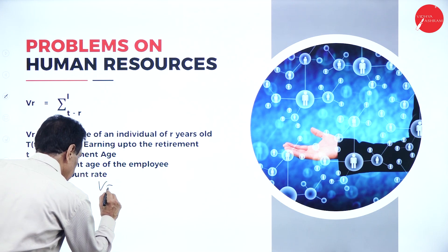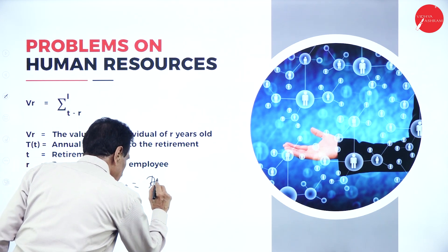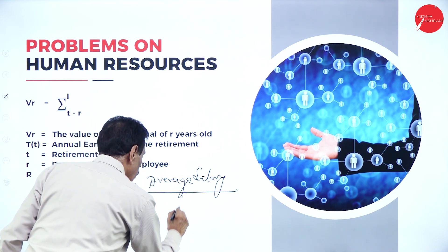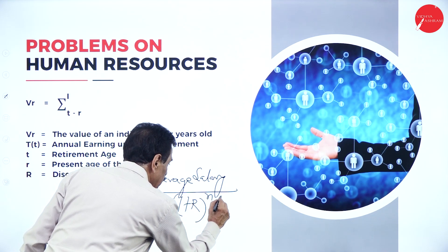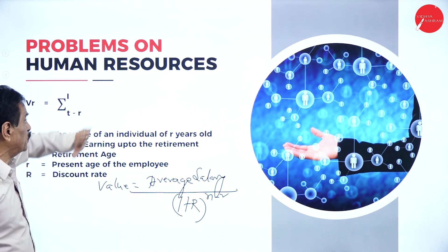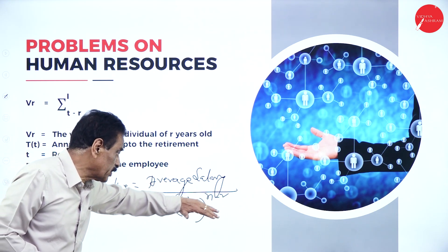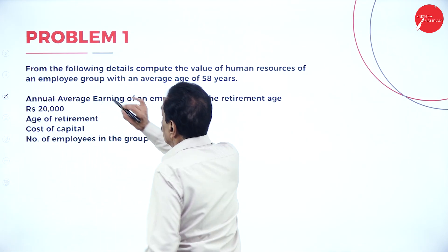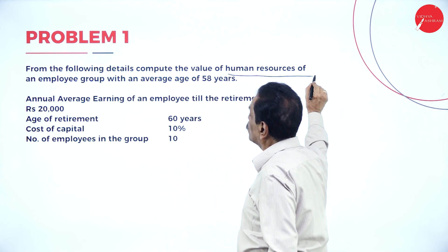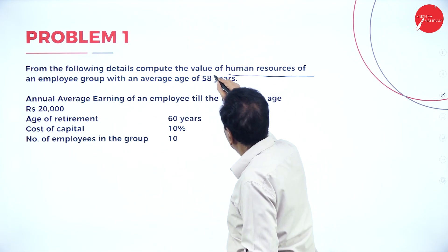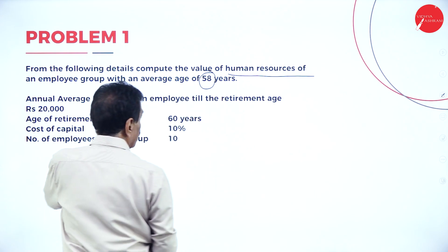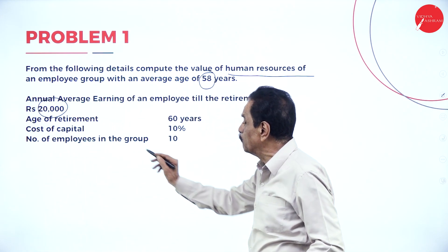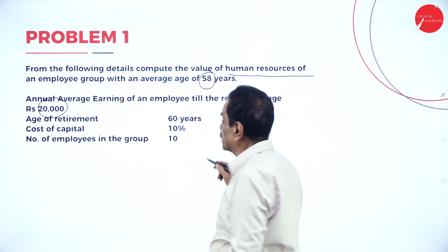The formula can be written as: Value = Average Salary divided by (1 + r) to the power of (t minus r), where t is the retirement age and r is the present age. From the problem: compute the value of human resources of an employee group with an average age of 58 years, annual earning of rupees 20,000, age of retirement 60 years, cost of capital (discount rate) 10 percent.